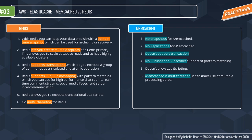Redis supports Pub/Sub messaging with pattern matching, which you can use for high-performance chat rooms, real-time comment streaming, social media feeds, and server intercommunication — but there is no publisher/subscriber support with pattern matching in Memcached. Redis allows you to execute transactional Lua scripts, which Memcached does not support. However, there is no multi-threading in Redis, whereas Memcached is multi-threaded and can make use of multi-processing cores, meaning you can handle more than one operation by scaling up compute capacity.